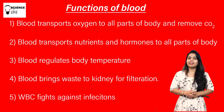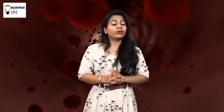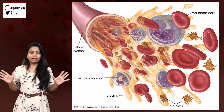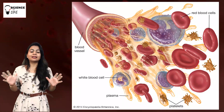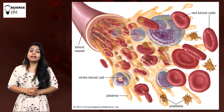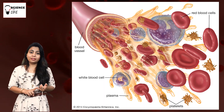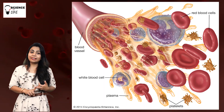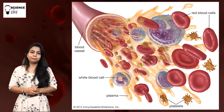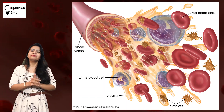Now, since this liquid is very important, we should know the composition of blood — what is actually present in blood. Look at the screen. You can see the composition of blood. It is composed of RBC, WBC, platelets, as well as plasma. Now we will study them one by one.